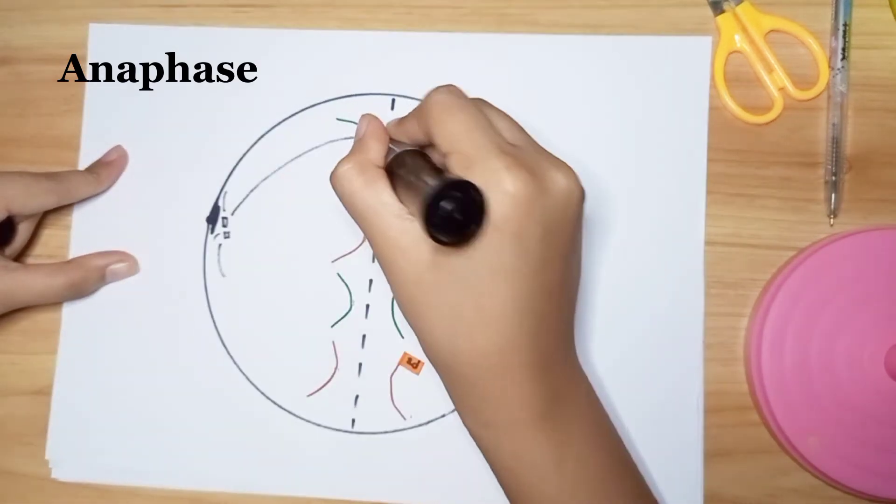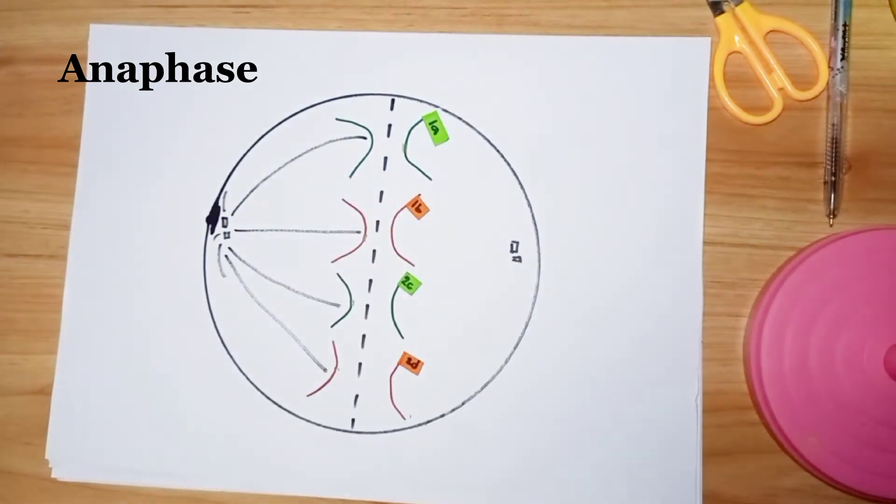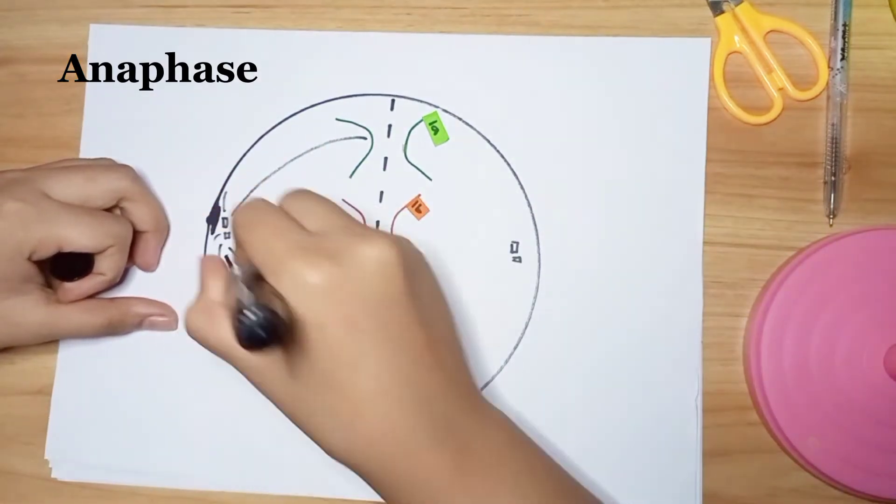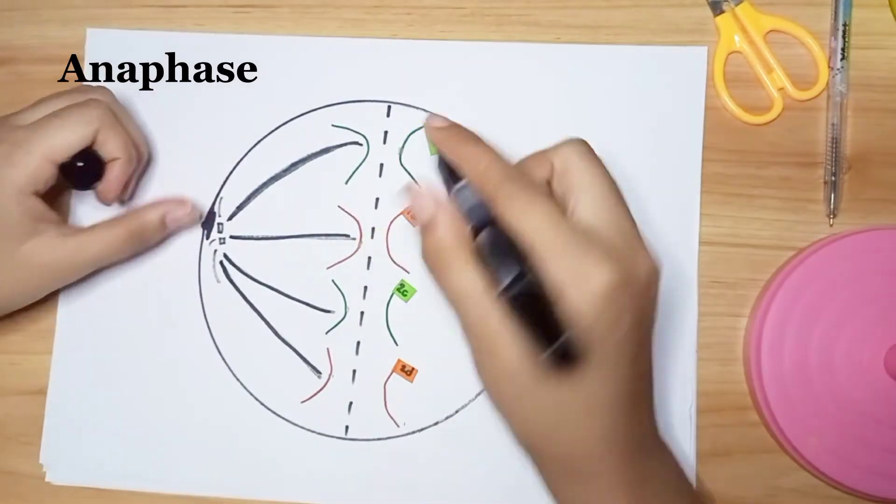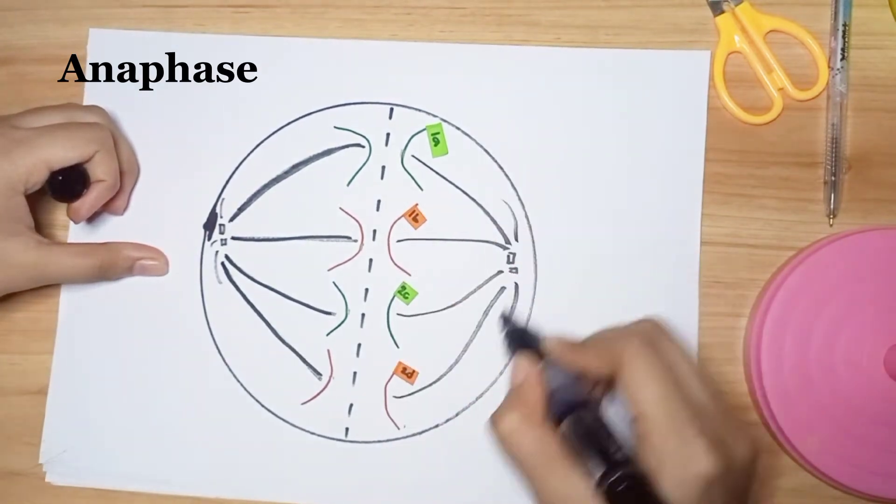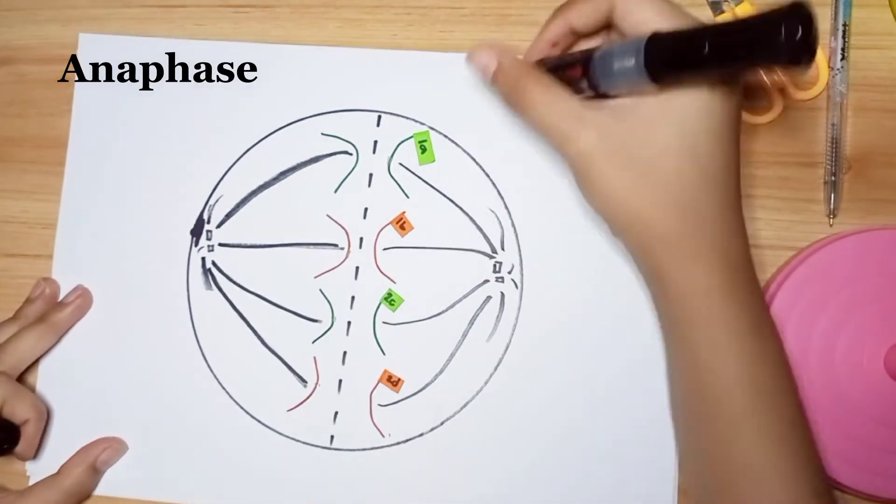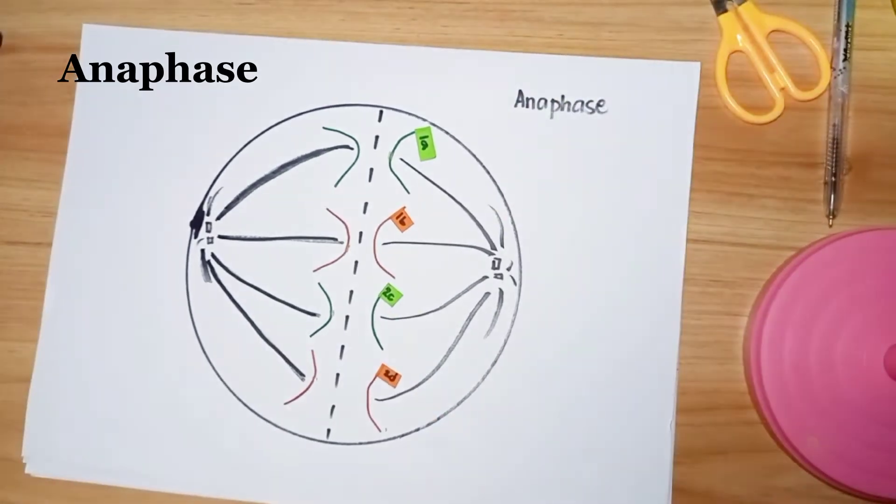During anaphase, the sister chromatids are separated simultaneously at their centromeres. The separated chromosomes are then pulled by the spindle to opposite poles of the cell. Anaphase ensures that each daughter cell receives an identical set of chromosomes.